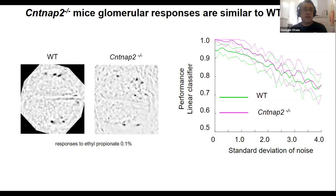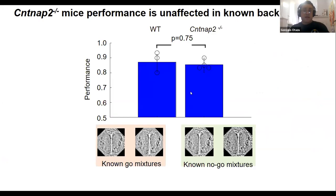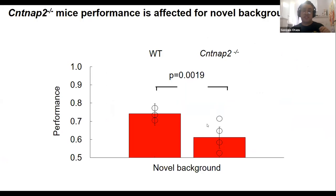Glomerular responses from intrinsic imaging were almost identical to wild-type mice, and classifier performance was nearly the same. The CNTNAP2 mice train as fast and perform equally well on the known background — a subtle but difficult task. However, when we switched to novel background odors, their performance dropped significantly; they cannot solve the task with novel backgrounds the way wild-type mice can.